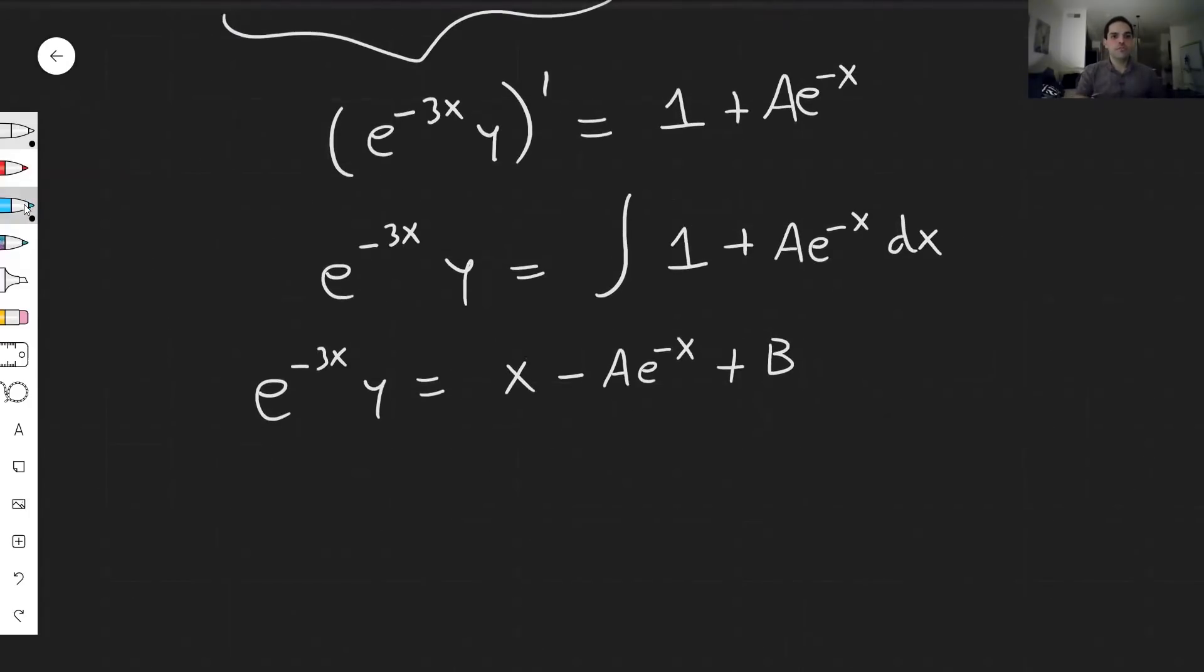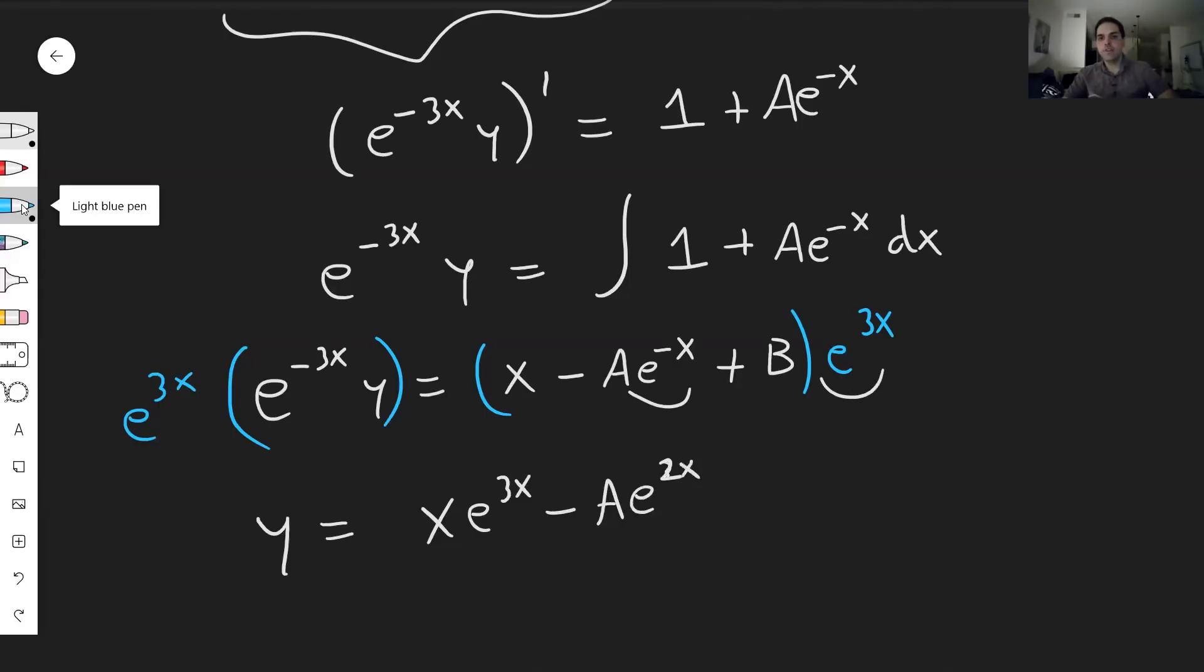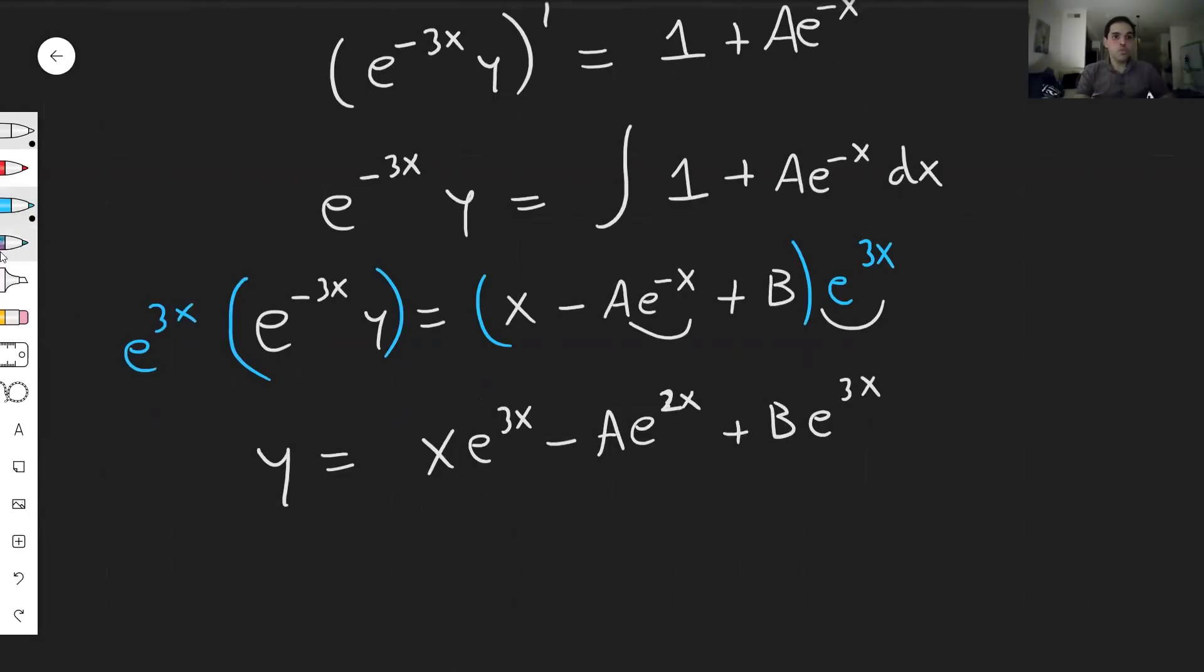And so this gives you e^(-3x)y. And again, to get rid of this e^(-3x), multiply this by e^(3x). So y = xe^(3x) - Ae^(-x)e^(3x) = xe^(3x) - Ae^(2x) + Be^(3x). And this gives you your solution.